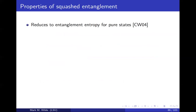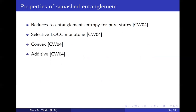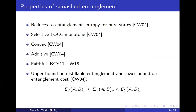What are the properties of squashed entanglement? Like the other entanglement measures, it reduces to the entanglement entropy for pure states. It is a selective LOCC monotone — so it's not only an entanglement measure, but has this stronger property. It's convex, additive, and faithful. And then the very useful thing is that it's an upper bound on distillable entanglement and also a lower bound on entanglement cost.